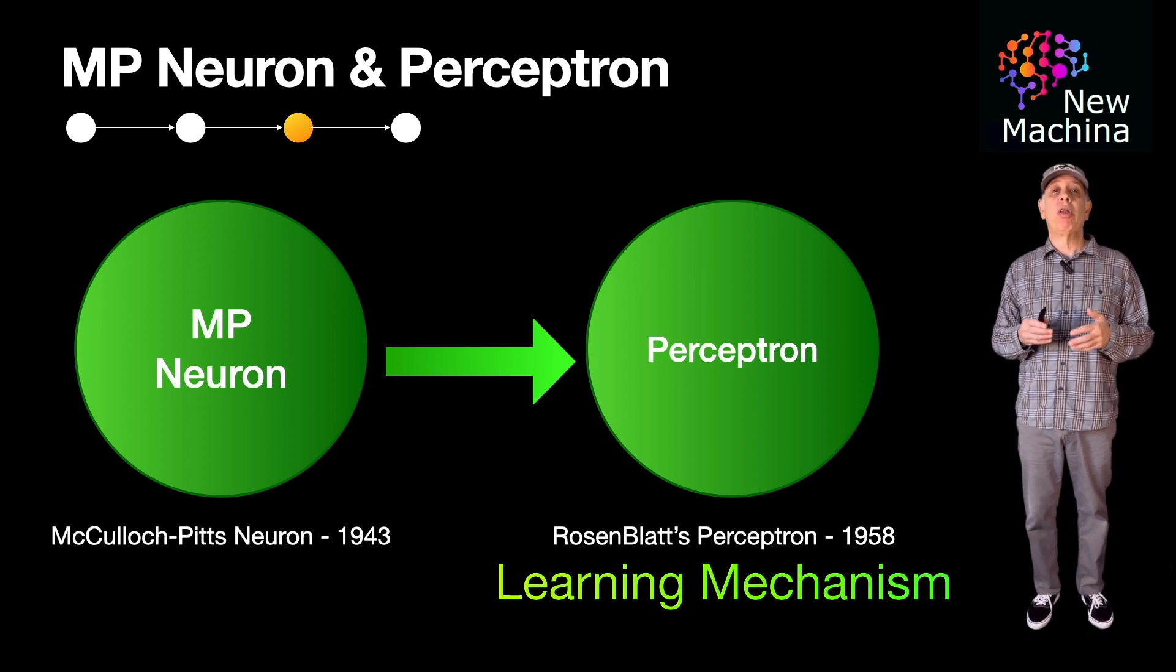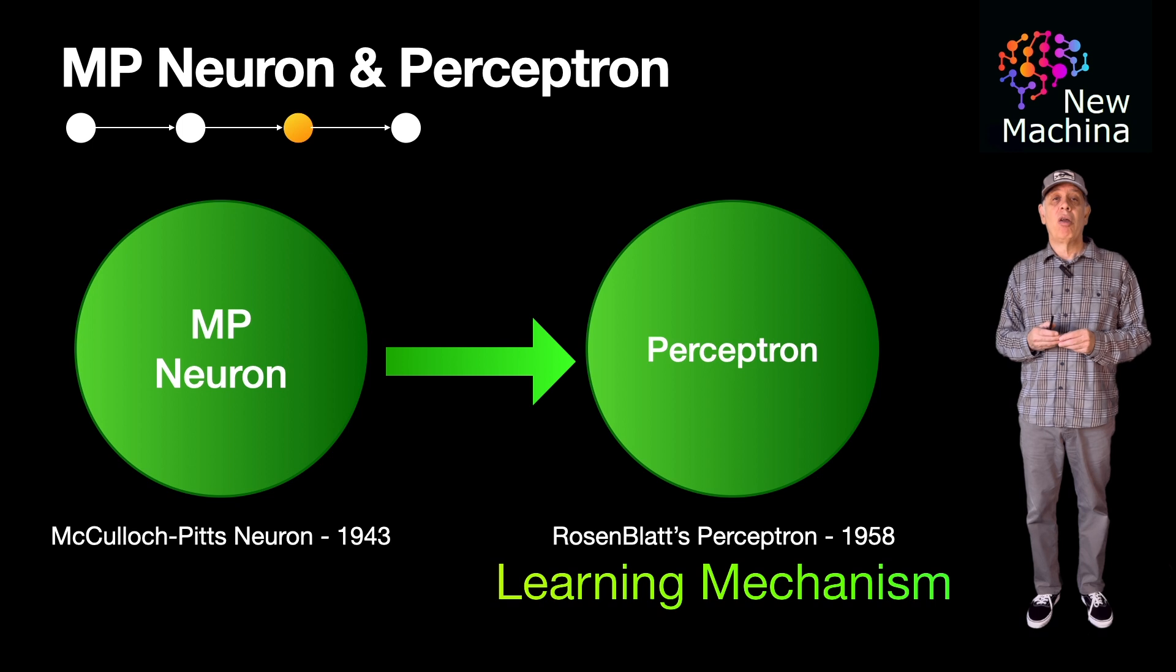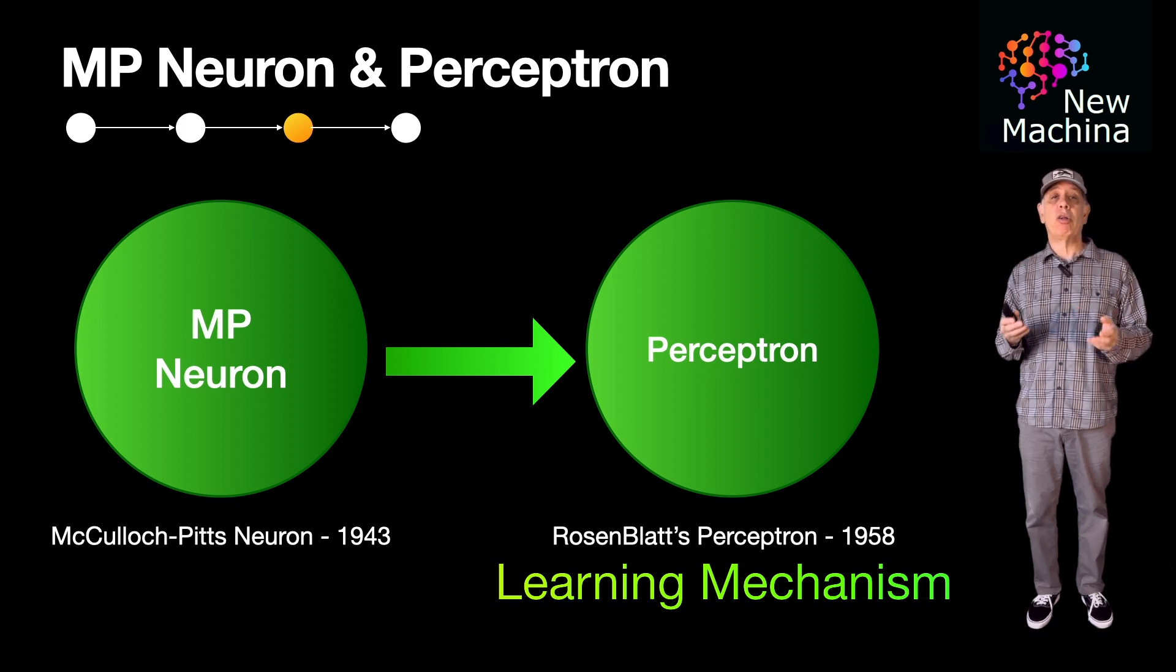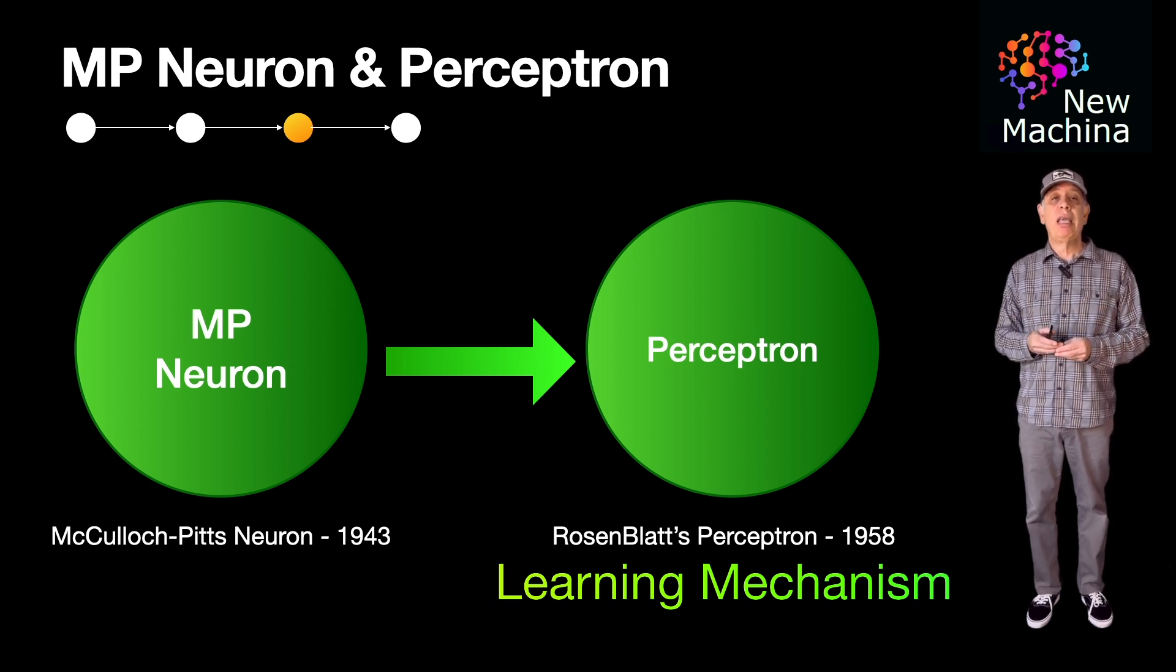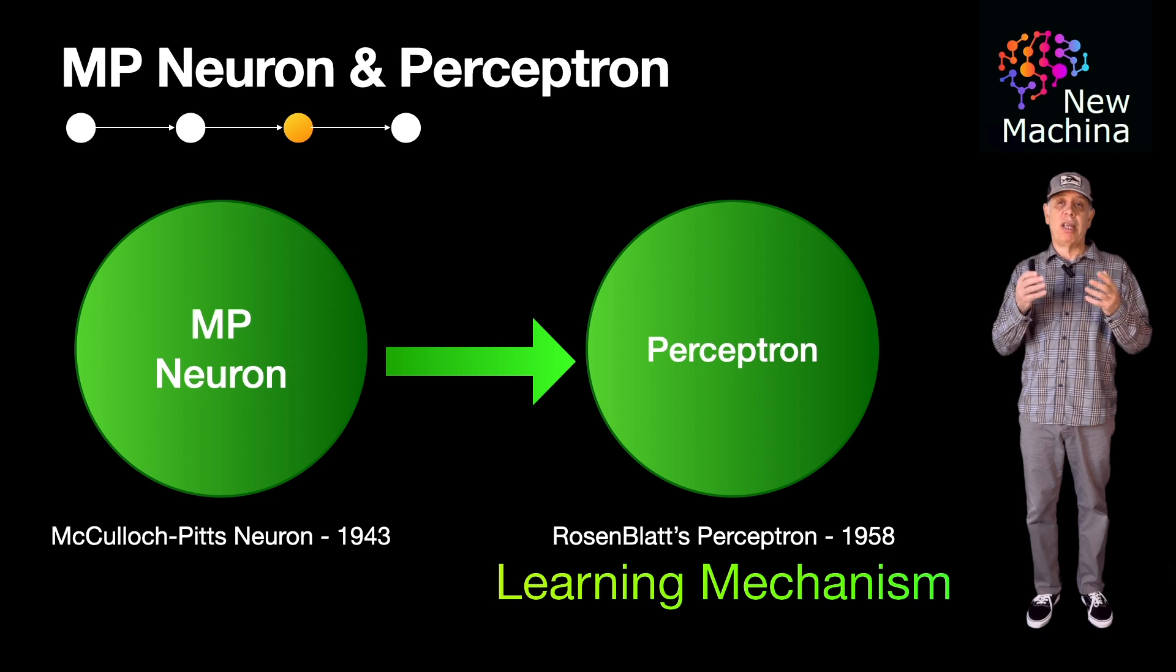I'll be doing a video in the near future showing how you can implement an AND gate with a perceptron neuron using PyTorch. I'll also include a few more examples of an MP Neuron implementing an OR gate and an AND gate respectively. This will give you a few more examples to check out. Keep an eye out for this video if it sounds interesting.